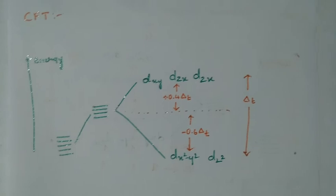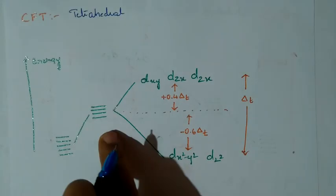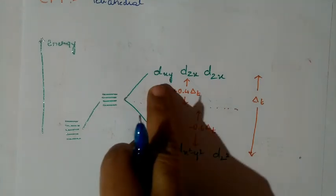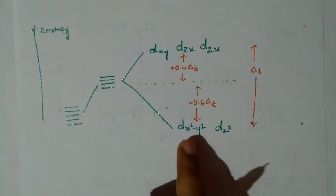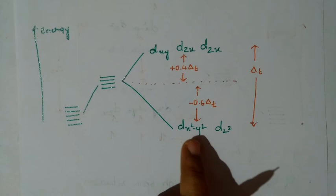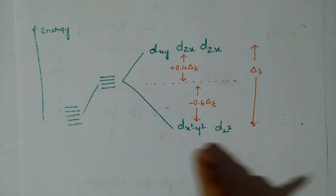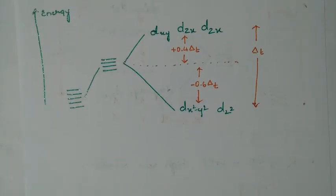Now moving on to Crystal Field Theory for the tetrahedral complex. Splitting still takes place, but in the tetrahedral complex the ligands approach in between the axes. So the orbitals lying between the axes experience more repulsion and are raised in energy. The orbitals along the axes experience less repulsion and are decreased in energy by −0.6Δt. Here Δt is the crystal field splitting energy in the tetrahedral field.